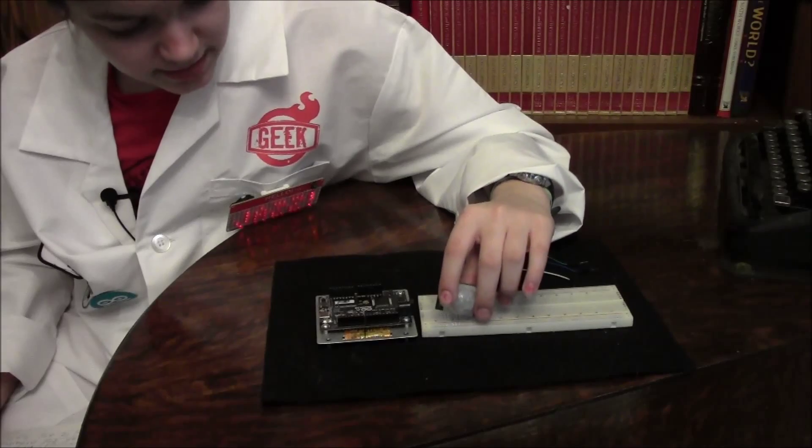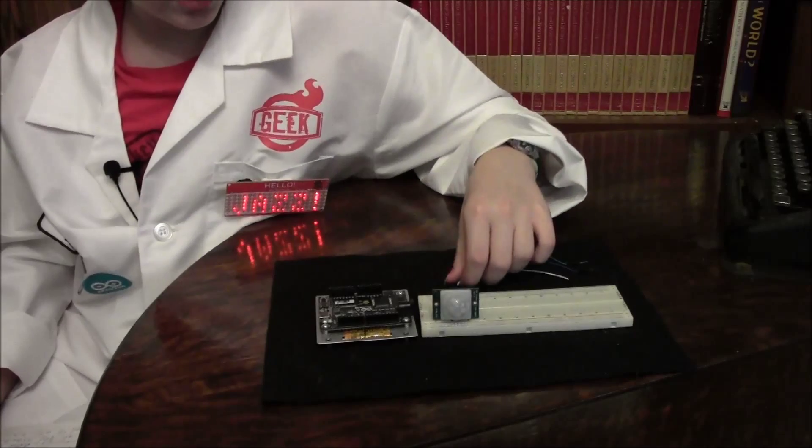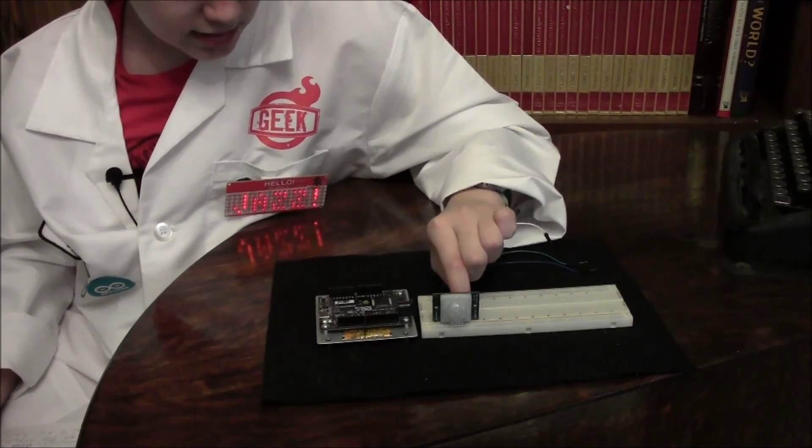Place the PIR sensor on the board so each pin has its own row. Put a jumper wire in each row.